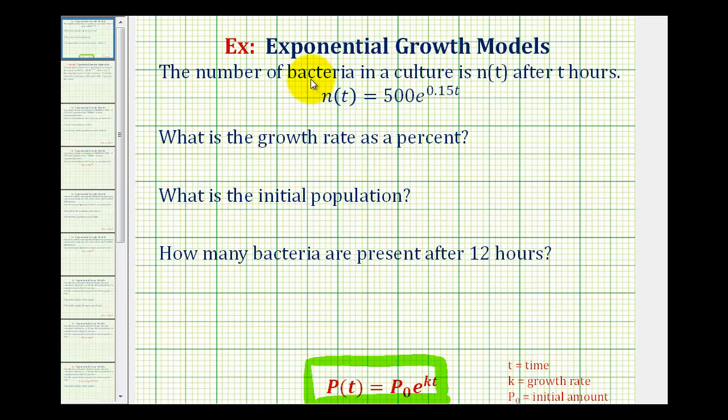So in this case, with our given function, when they ask us to find the growth rate as a percent, they're asking us to determine the value of k and then convert it to a percentage. So the growth rate in this case is equal to 0.15, which as a percent would be 15 percent, and because our time is t in hours, this is 15 percent per hour.